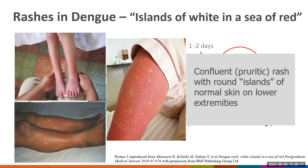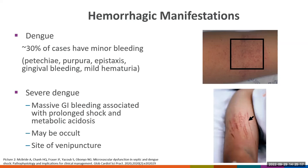Regarding bleeding in dengue, only about a third of patients with non-severe dengue will present with minor hemorrhagic manifestations. The occurrence of severe bleeding — usually gastrointestinal bleeding — has been associated with prolonged shock and metabolic acidosis. Gastrointestinal bleeding might be occult, so it's important to ask patients about stool characteristics. The first picture shows a petechial rash, and the second shows skin bleeding manifestations after the use of a blood pressure cuff in a dengue patient.